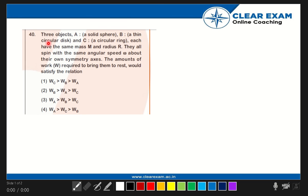Hello everyone, let's start with our 40th question. Three objects: A, a solid sphere; B, a thin circular disk; and C, a circular ring. Each have the same mass M and radius R. They all spin with the same angular speed omega about their own symmetry axes.